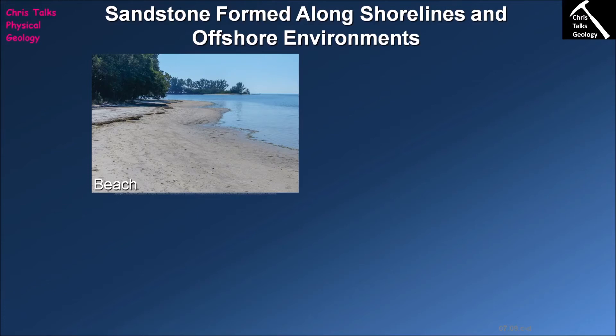Behind our beach sediments we are going to have dune sediments being moved about by the wind, and on a superficial level these are going to look very similar to the dune sediments we would get in a desert environment. However, there are features that allow us to distinguish between cross-bedded sandstones from a desert and those from a beach — the primary thing we're going to look for is fossils. We identify whether the animal lived in a freshwater, saltwater, or desert environment, and by having this information we can work out what environment our sandy sediment was deposited in.